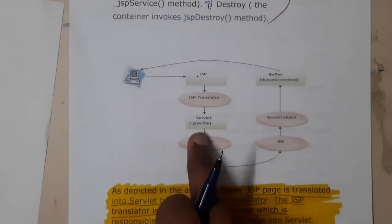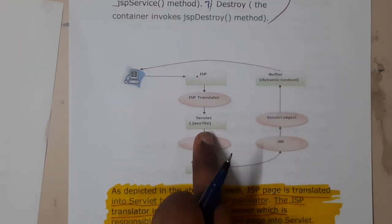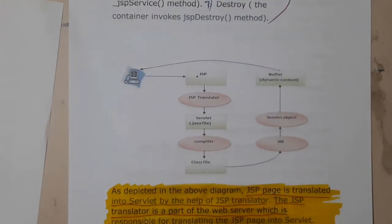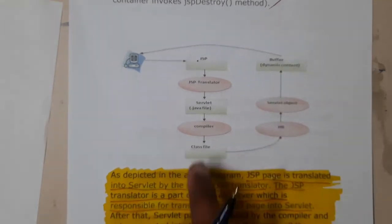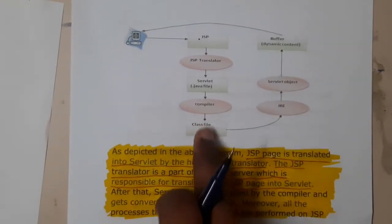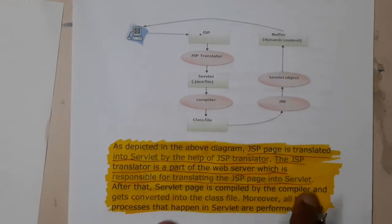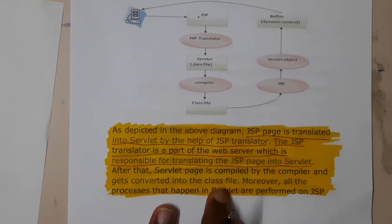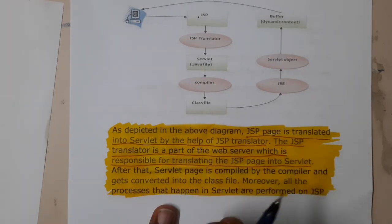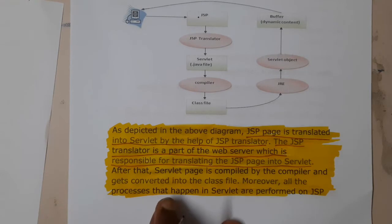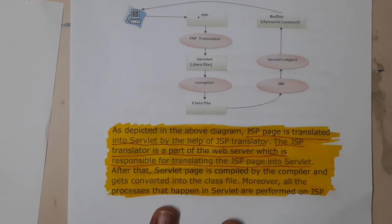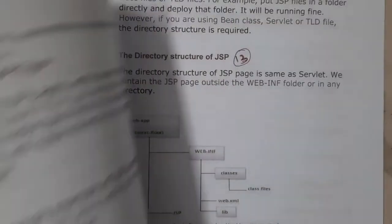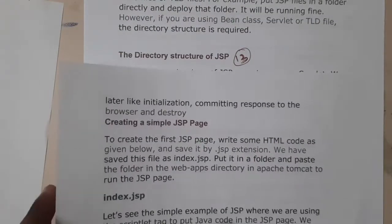Now this is Java code, so whenever you are trying to run Java code you need to first compile it, then run it. Once you compile it, it will generate .class files — everyone knows that .class files are generated when you compile Java code. Moreover, all the processes that happen in Java servlets are performed on JSP as well.